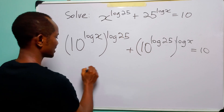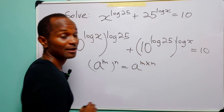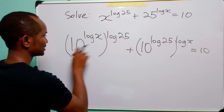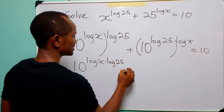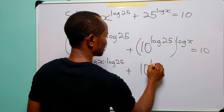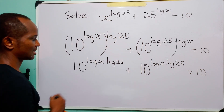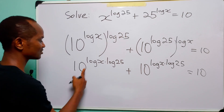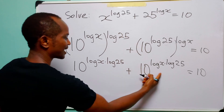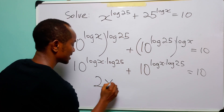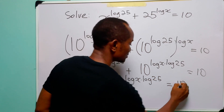Recall from our studies of indices that when we have a to the power m to the power n, this is simply equal to a to the power m multiplied by n. So this now becomes 10 to the power log x multiplied by log 25, plus 10 to the power log x multiplied by log 25, is equal to 10. You can see that we have two of the same thing, so we can collapse the left-hand side as 2 times 10 to the power log x multiplied by log 25, equal to 10.